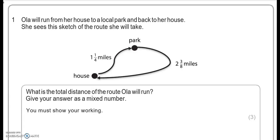Ola will run from her house to a local park and back to her house. She sees this sketch of the route she will take. What is the total distance of the route Ola will run? Give your answer as a mixed number. You must show your working.